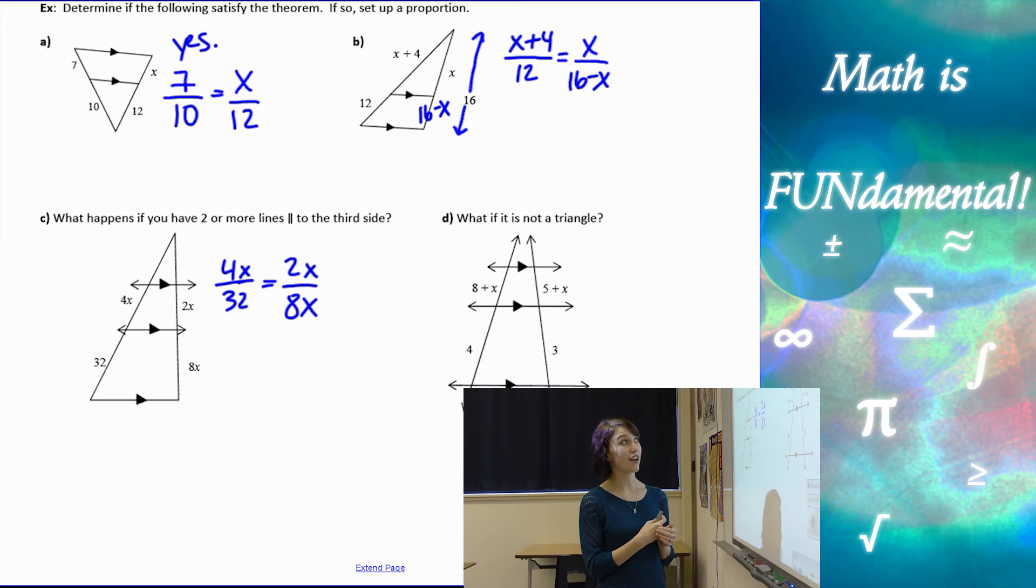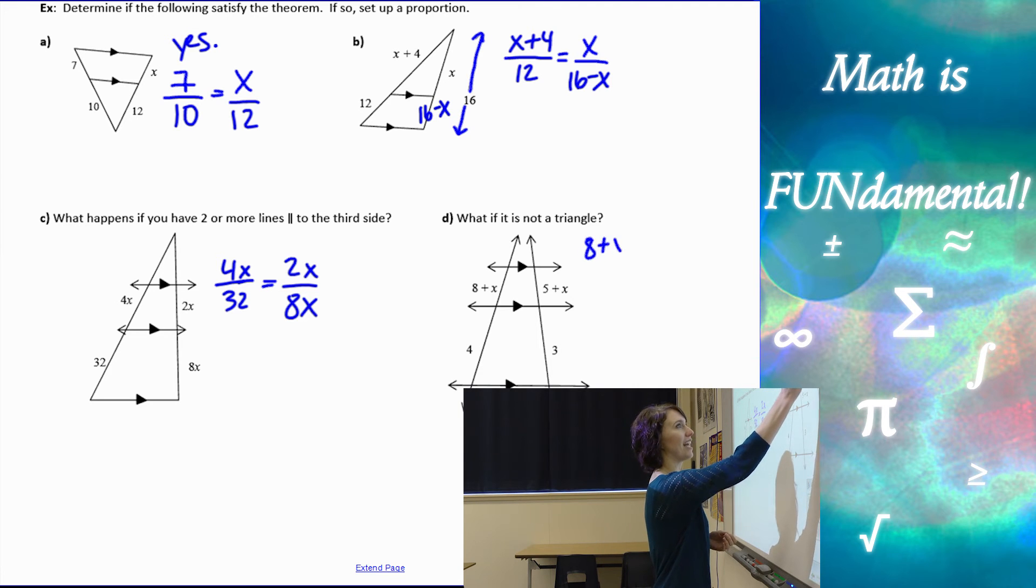What if it's not a triangle at all? Turns out, it doesn't matter. We can still set up the same proportion. So 8 plus X over 4 equals 5 plus X over 3. Cross multiply and solve for your X.